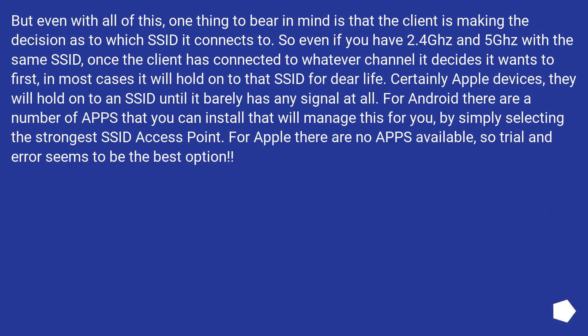Bear in mind that the client is making the decision as to which SSID it connects to. So even if you have 2.4GHz and 5GHz with the same SSID, once the client has connected to whatever channel it decides first, in most cases it will hold on to that SSID for dear life. Apple devices especially will hold on to an SSID until it barely has any signal at all. For Android there are apps that will manage this by selecting the strongest SSID access point. For Apple there are no such apps available, so trial and error seems to be the best option.